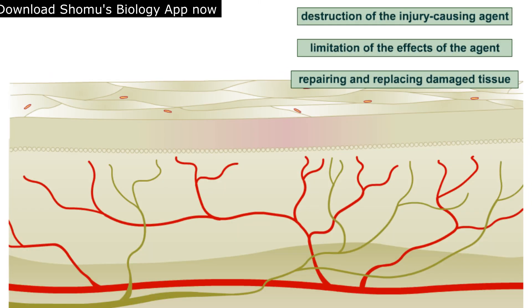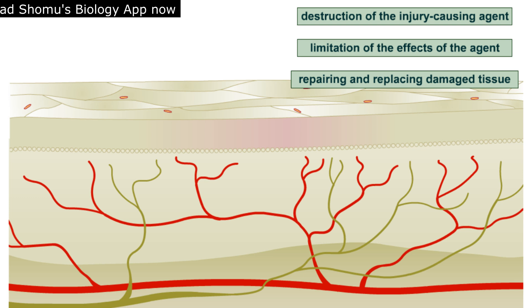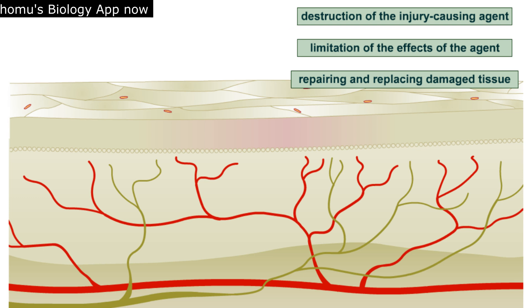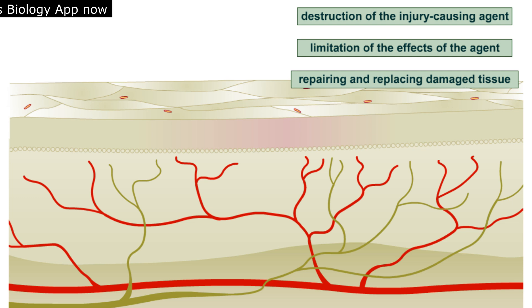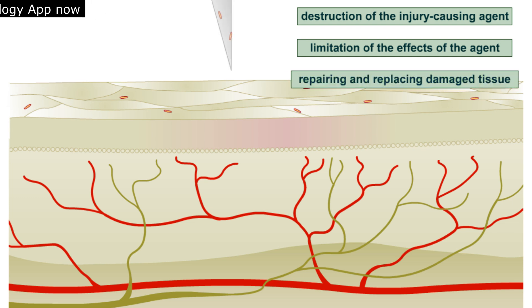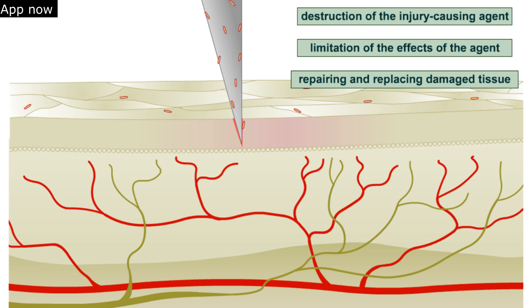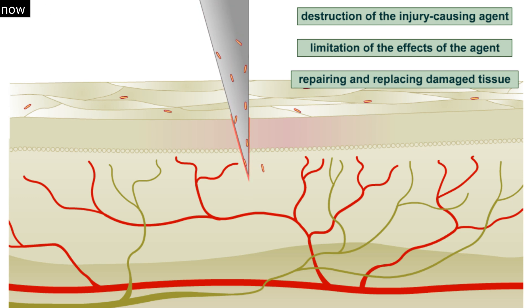Regarding limitation: even if destruction of the injury-causing agent is not possible, inflammation helps to limit the effect of the agent by confining the agent and its by-products to the site of injury. This is accomplished through the clotting that occurs during tissue repair.